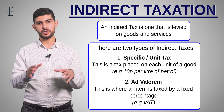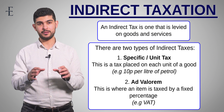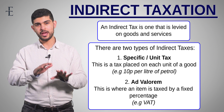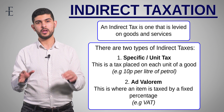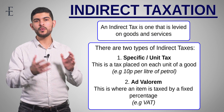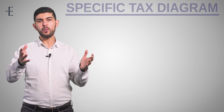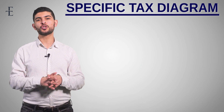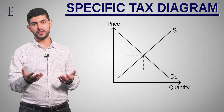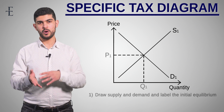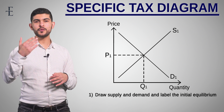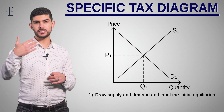The purpose of this video is to go through how to construct the diagram systematically, step by step, so that you never drop a single mark when it comes to an indirect tax diagram. Let's start with a specific tax. Step one is simply to draw a supply and demand diagram. Remember to label the equilibrium Q1, P1. Before we shift anything, let's go through the logic of what's about to happen.